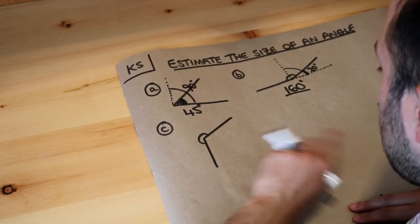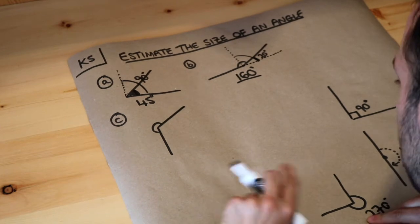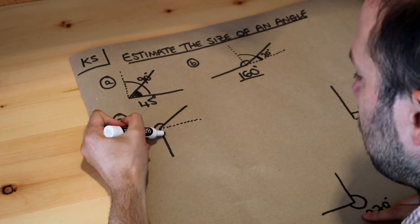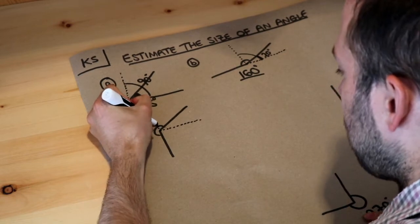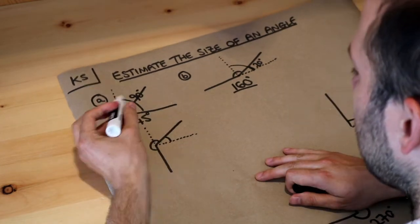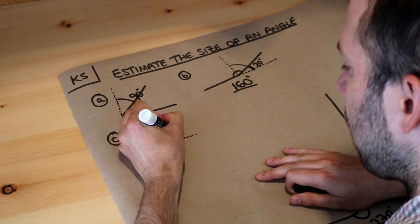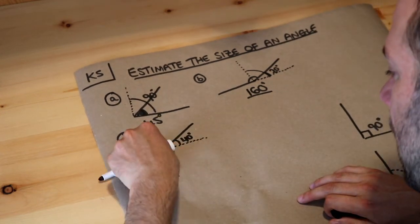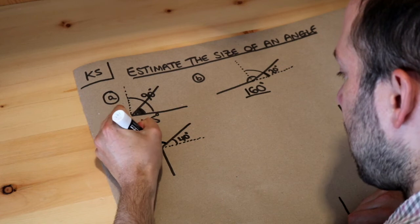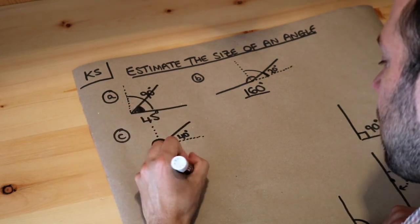This final angle looks a bit like the 270 degree angle. If we draw a dotted line to make it a 270 degree angle, and then add an extra line going from top to bottom, this section here is 90 degrees. This smaller piece looks like slightly less than half of that 90 degrees, so I'd estimate it as about 40 degrees. Since the total angle is 270 degrees, subtracting 40 gives us 230 degrees — so we estimate this angle is 230 degrees.